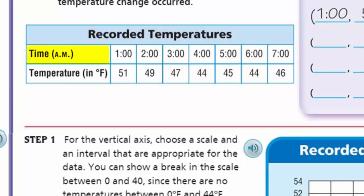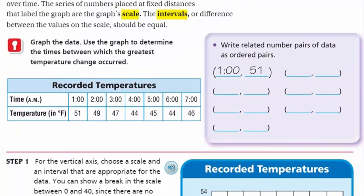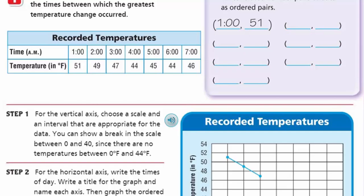We have the time in the a.m. — the morning — from one o'clock through seven o'clock, with different temperatures correlated to each time. At one o'clock in the morning it was 51 degrees Fahrenheit. These are related number pairs — ordered pairs of data. We're going to associate one o'clock in the morning with 51 degrees. There's our table.